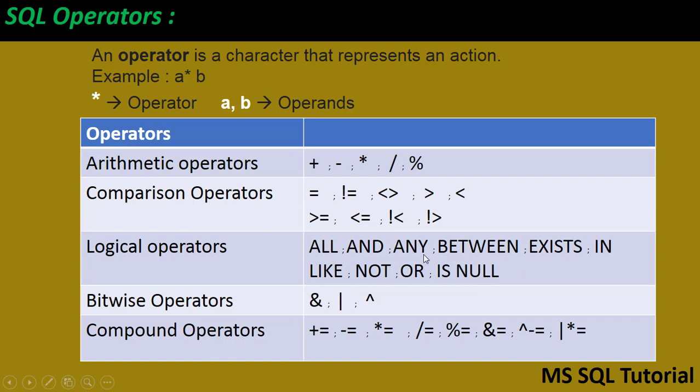Next, bitwise operators: bitwise AND, bitwise OR, and bitwise exclusive OR. These are used for true or false evaluations.